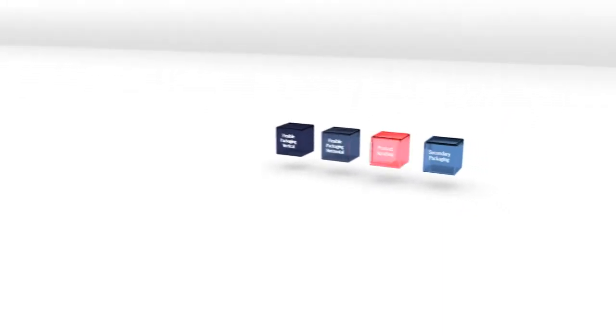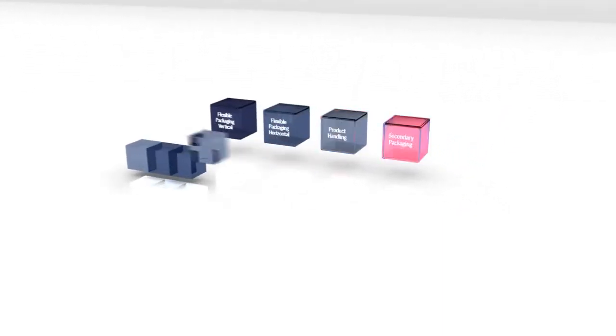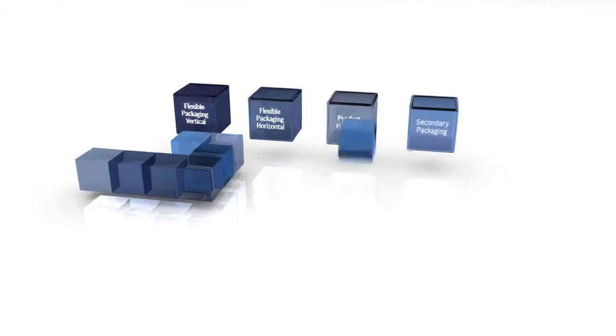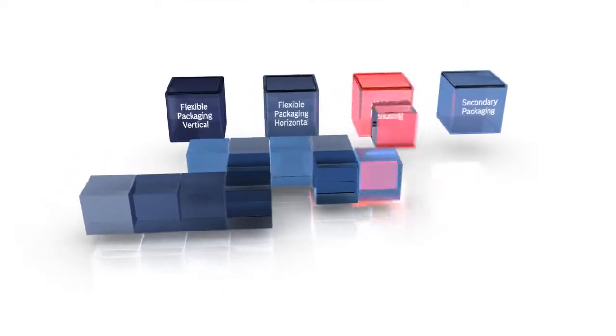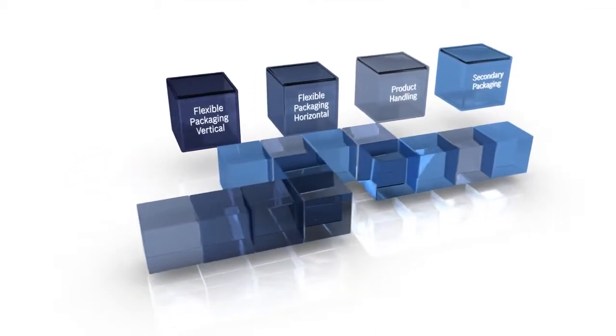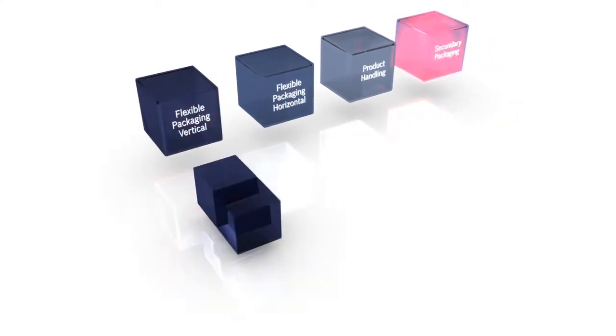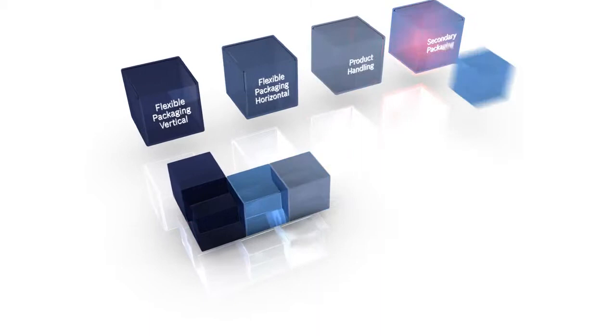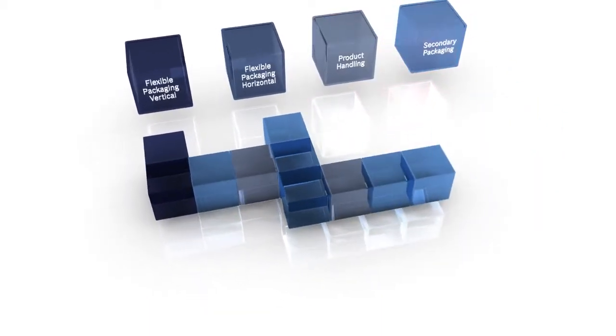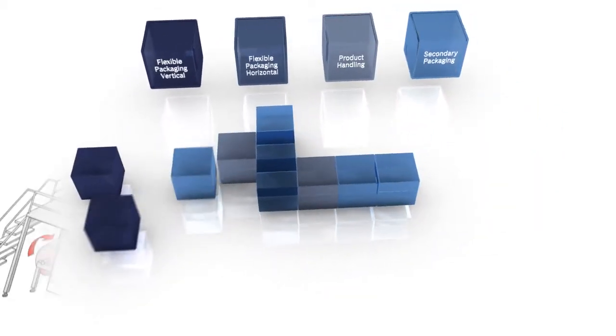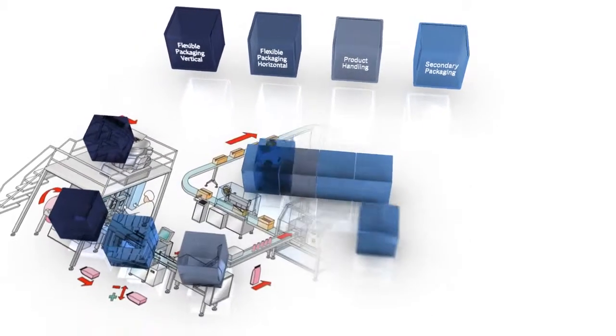This defines our line competence to integrate proven standard machines with application-specific options into efficient and complete lines. As in this example of a vertical packaging line, various modules from the dosing device to the vertical form fill-and-seal machine to grouping into shipping cartons create a profitable overall solution.